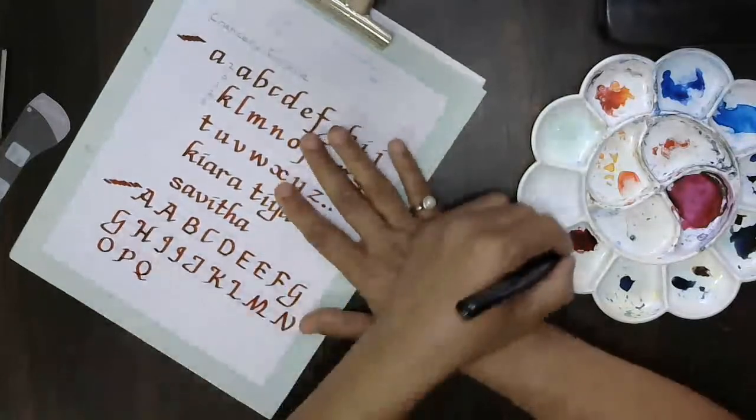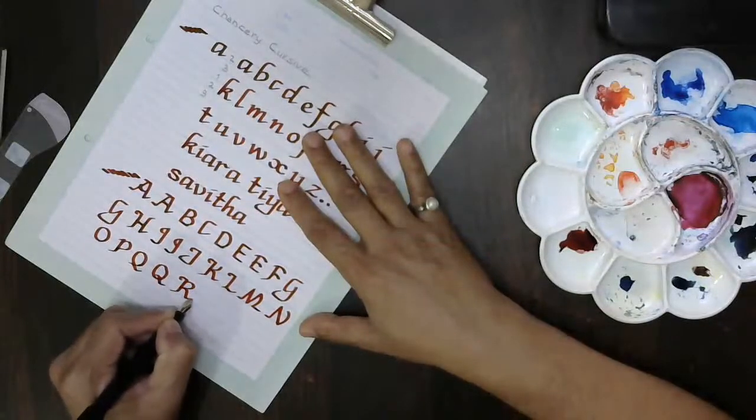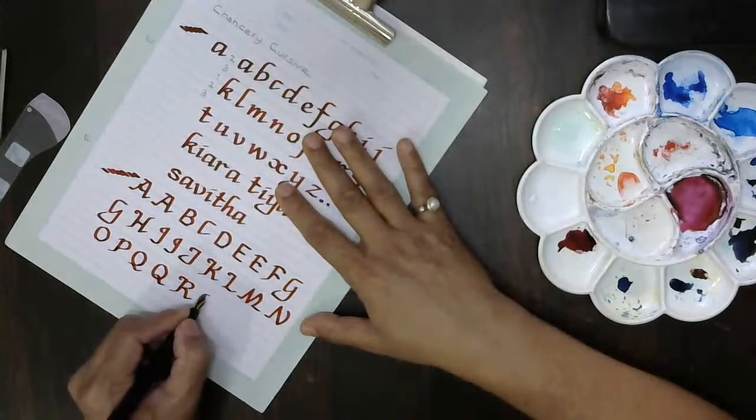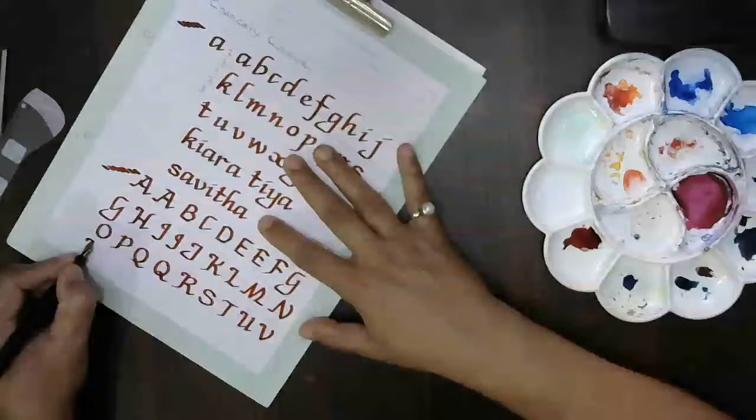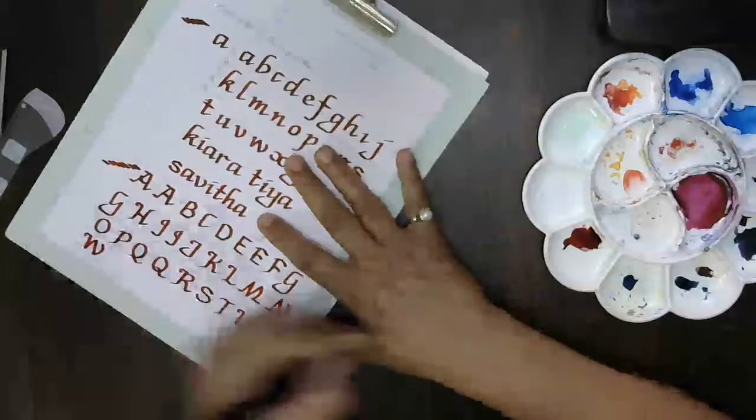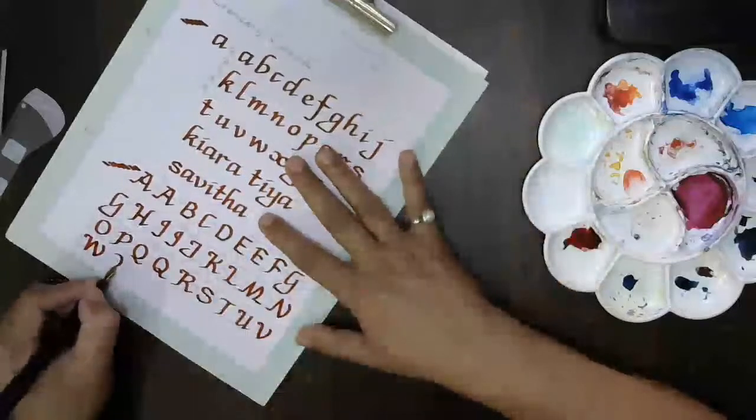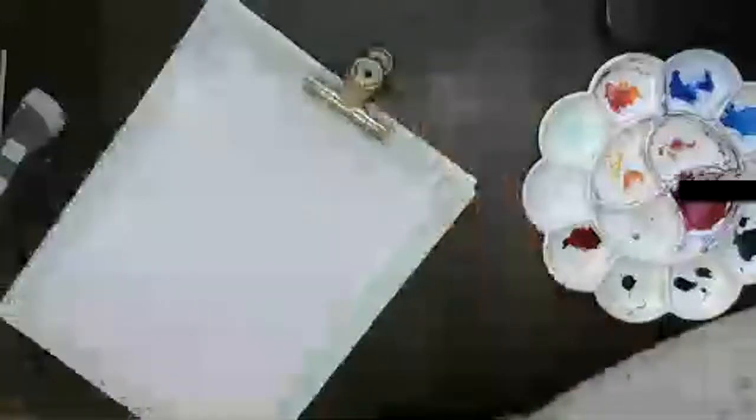F, G, H, I, J. Then comes K. Q can be this way as well as this way.